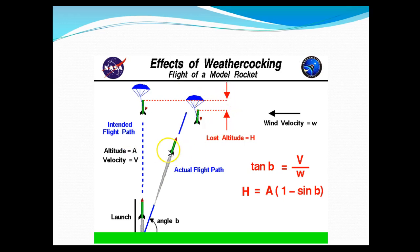And the effect is you're going to actually lose some altitude. So we want to have a CP and a CG configured such that we don't have so much weather cocking. We want to fly as straight up as possible so we don't lose altitude. Or we have a design that takes a wind velocity into account.